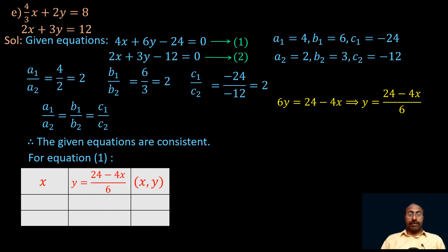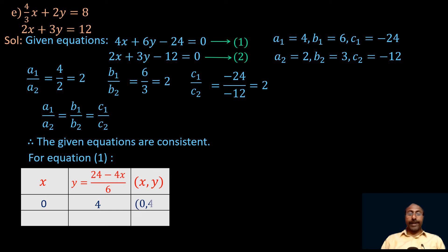Take any two values for x. First, take x equal to 0. If x equals 0, then y equals 24 minus 0, that is 24 by 6, which equals 4. So the point (x, y) is (0, 4). And if x equals 3, then y equals 24 minus 12, which is 12 by 6, which is 2. So the point is (3, 2).